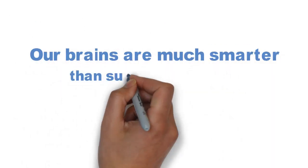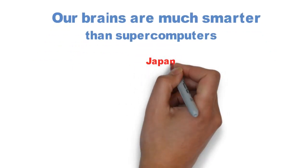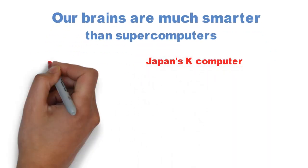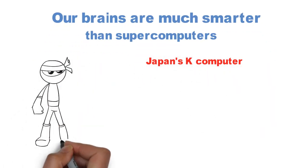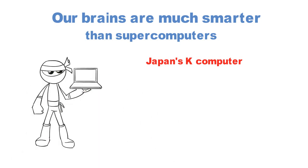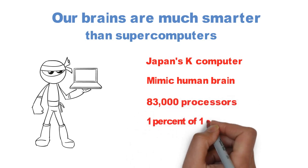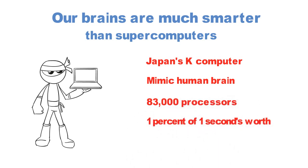Firstly, our brains are much smarter than supercomputers. In the year 2013, Japan's K computer, which is still world's fourth most powerful supercomputer, was used to mimic human brain. But even with its 83,000 processors, it could mimic just 1% of 1 second's worth of human brain activity. And it took 40 minutes to do so.